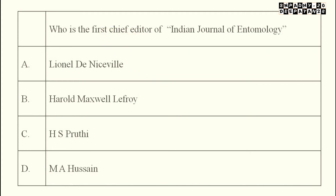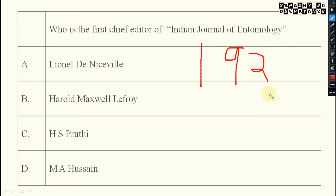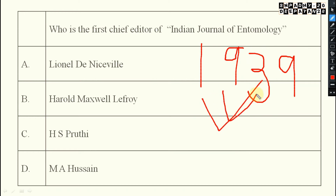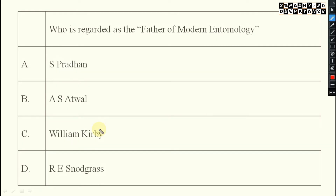Next: who was the first chief editor of the Indian Journal of Entomology? The Indian Journal of Entomology publication started in 1939 — note this down. The Entomological Society was established in 1938, and publication started from 1939. The first chief editor was H.S. Pruthi — Ham Singh Pruthi. This is very important.